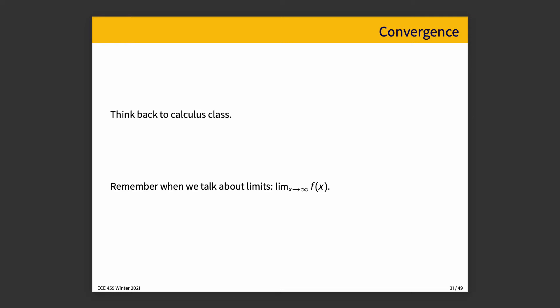Some functions don't have convergence. If f of x is, just for the sake of an example, sine x — it won't converge, doesn't settle down to any particular value. It just keeps oscillating back and forth forever. Even as x goes to infinity, it doesn't converge.